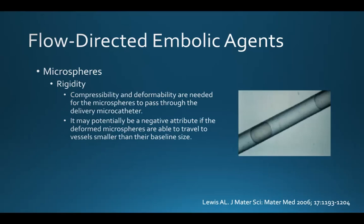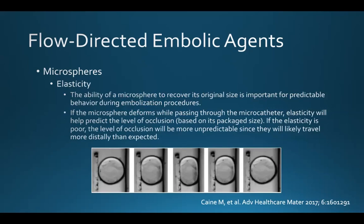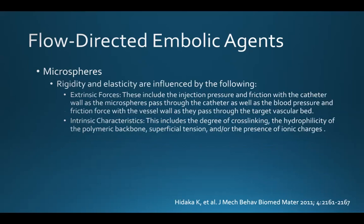In terms of rigidity, it's important for microspheres to have some degree of compressibility and deformability, as that is needed to allow them to pass through the delivery microcatheter. However, this may become a negative attribute if the deformed microspheres can travel to vessels smaller than their baseline size. Elasticity — the ability of a microsphere to recover its original size after compression — is therefore also important. If the microsphere deforms while passing through a microcatheter, elasticity helps predict the level of occlusion. If elasticity is poor, the level of occlusion will be more unpredictable since those spheres will likely travel more distally than expected.